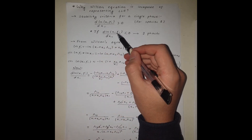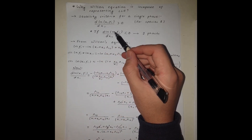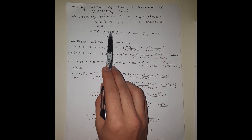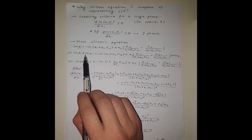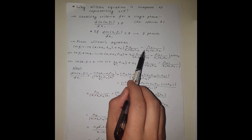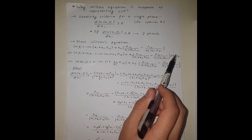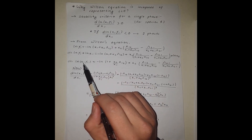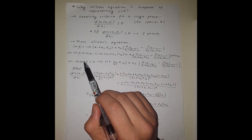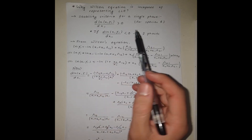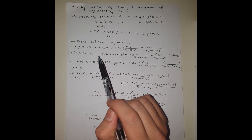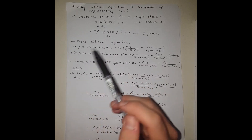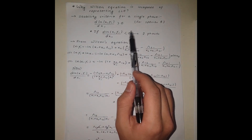We have γ1, and the only thing missing is x1, the mole fraction of species one. If we add ln(x1) to both sides and use the properties of logarithms, we obtain ln(x1 · γ1). Now we need to find the derivative of this expression and compare whether it is greater than or less than zero.